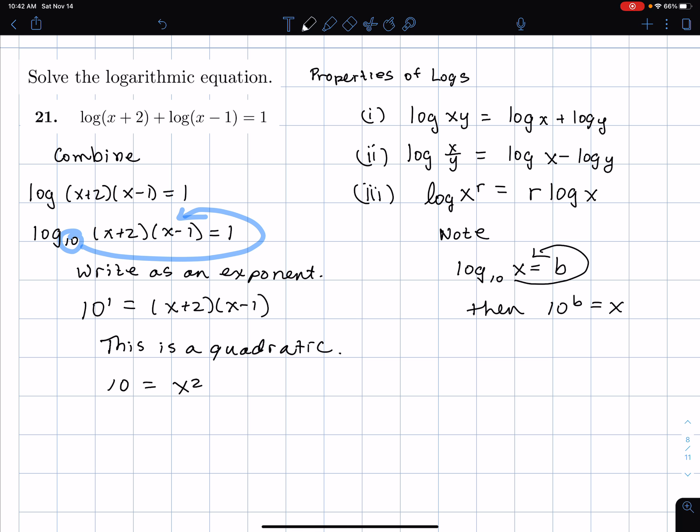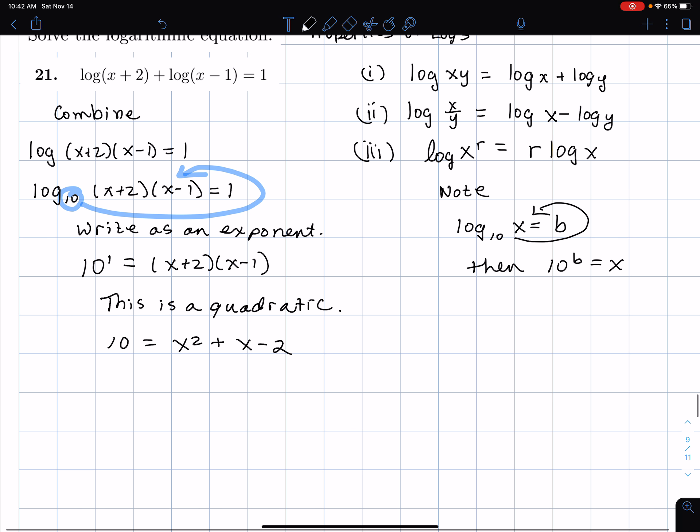What I'm going to do is I'm going to multiply this out. I have x squared plus x minus 2. I used FOIL. I sort of did it in my head. And the idea is that we are supposed to know how to do that stuff sort of quickly. So I subtract 10 from both sides and change the order. So I have x squared plus x minus 12.